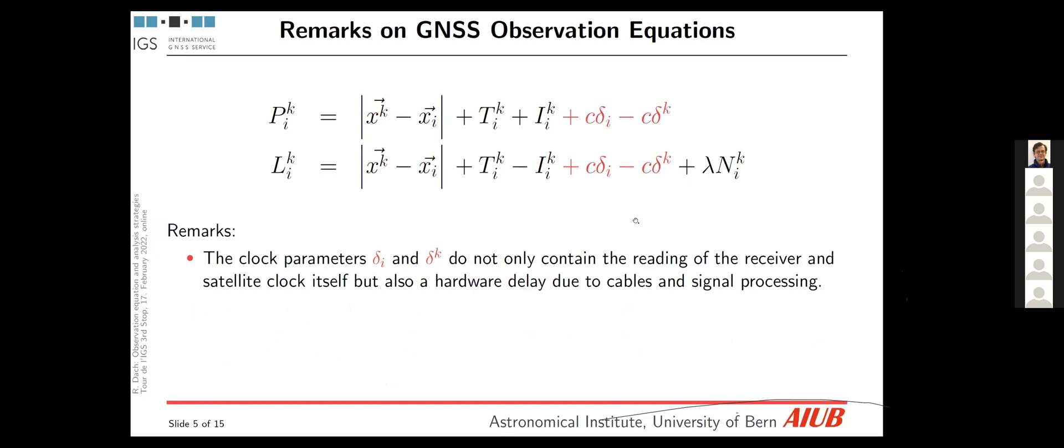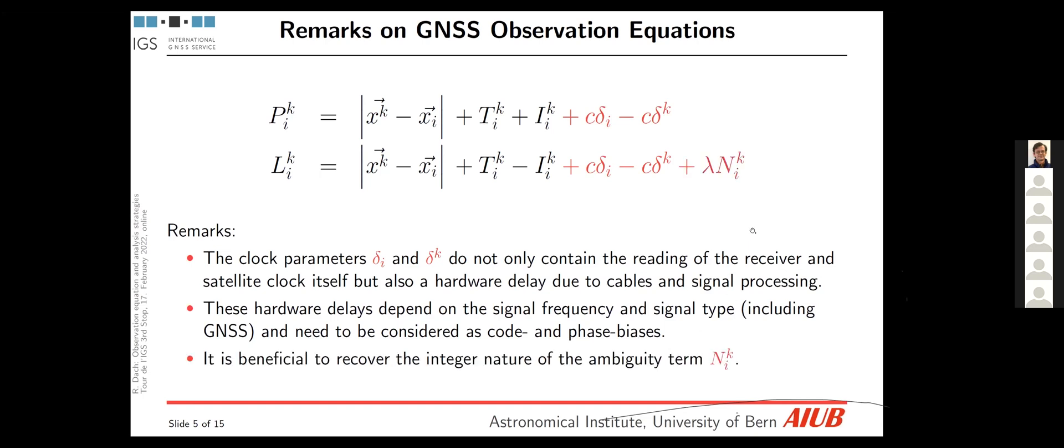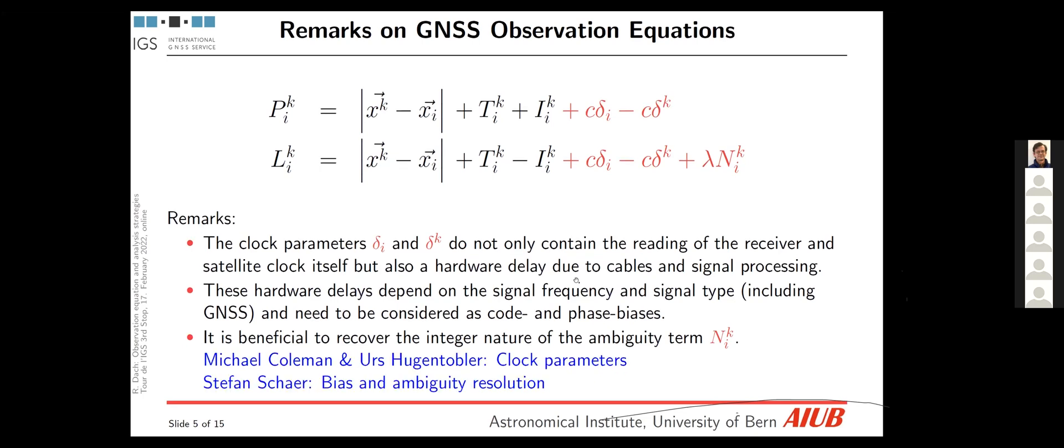So we have the clock terms. And to be honest, I have cheated here as well a bit in the observation equation because identical for the different observation types is only the reading of the hardware clock in the receiver and satellite. We have, in addition, some cable delays and signal processing effects that end up in some hardware delay biases that depend on the signal frequency, signal type, and even on the GNSS. They are different for code and phase. On top, we want to resolve for the ambiguities, meaning that we come back to the integer nature of the ambiguity term here. For this, we have three presentations or three contributions from Mike Kuhlmann-Ushuken-Toppeler on the clock parameters and from Stefan Scheer on the bias and the ambiguity resolution.